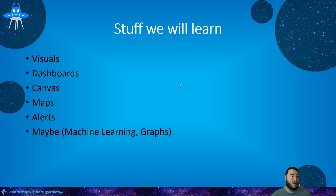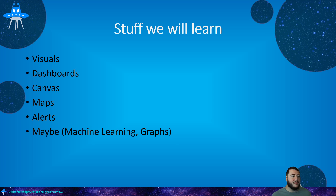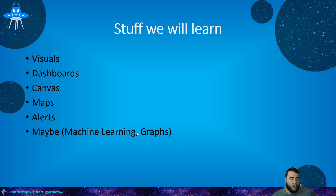So some things we will learn: visuals — we're going to look at creating visuals; dashboards; and Canvas, which is pretty cool. It's a more simplified version of dashboards — more visually appealing, kind of like infographics. Maps, which I haven't dived into too much, but we'll take a look. Alerts — setting up alerts is really powerful, so we'll look at what that takes. And maybe machine learning and graphs, depending on pricing, since there may be added costs for those features.